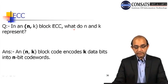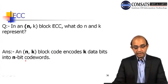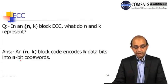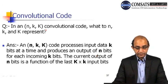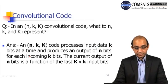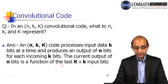In an (N, K) block ECC, K represents the number of data bits and N is the total codeword length after encoding. Block code encodes K data bits into N-bit codewords. Convolutional codes also use N and K notation, taking input K bits at a time and producing N bits of output. For each incoming K bits, the current N-bit output is a function of the last K×K input bits.